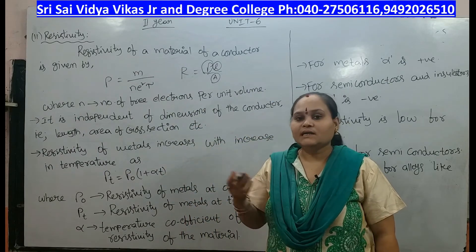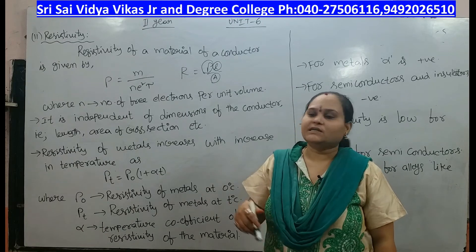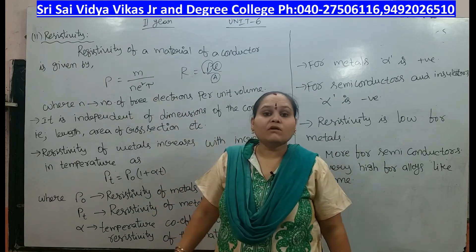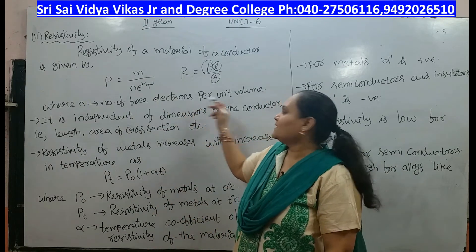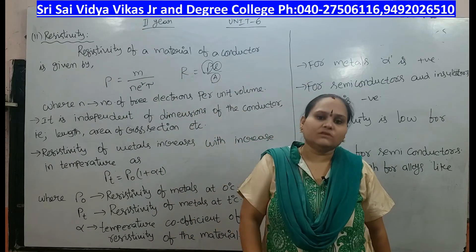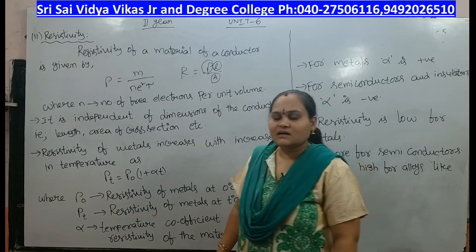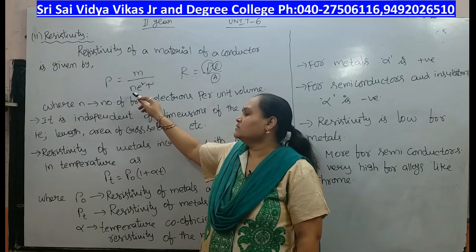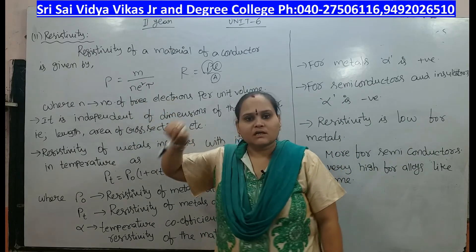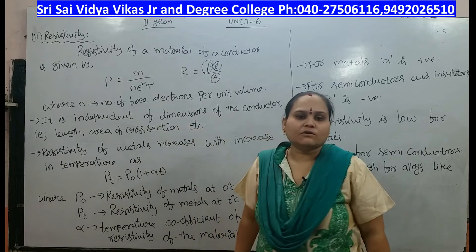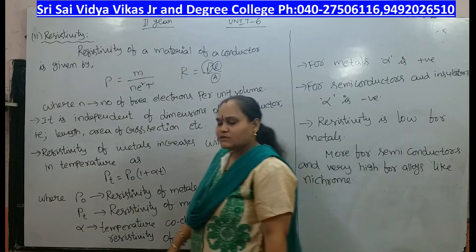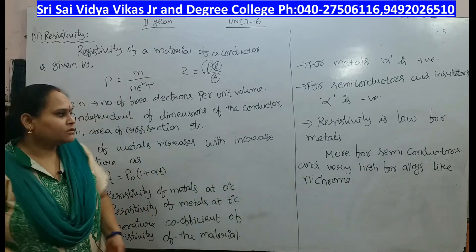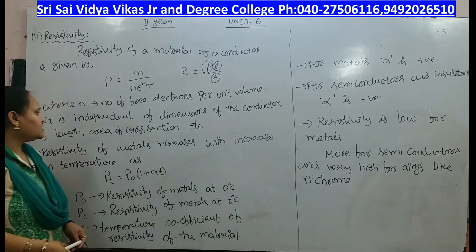The resistivity formula is rho equal to m divided by n e squared tau, where m is the mass of the electron, n is the number of free electrons per unit volume, e is the charge of the electron, and tau is the relaxation time.